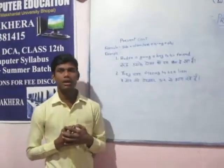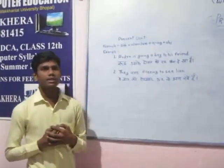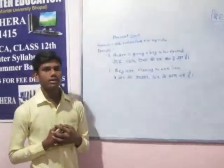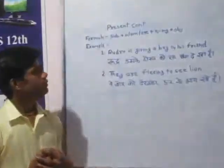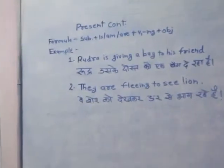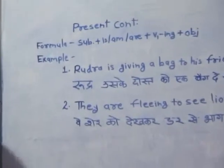The present continuous formula is: Subject plus is/am/are plus the third form of verb with -ing plus object. So for example: